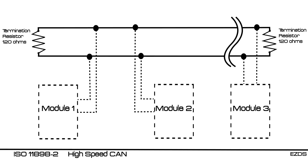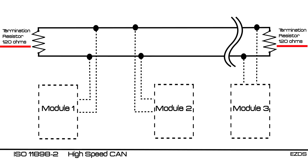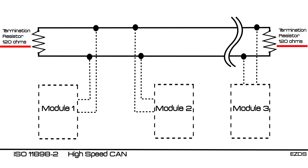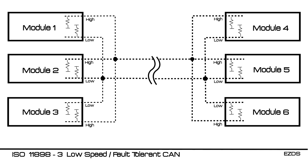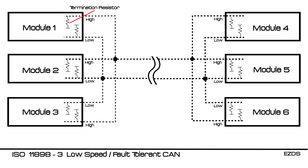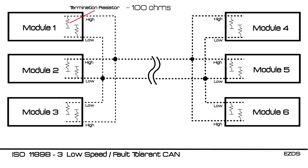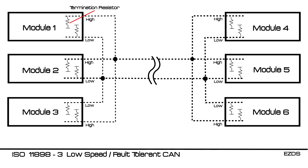High-speed CAN allows up to 1 Mbps and uses a linear bus with 120-ohm termination resistors located at each end. In low-speed CAN, instead of having two termination resistors at the ends, termination resistors are located at each module, and its overall resistance is around 100 ohms. Due to the individual termination at modules, low-speed CAN allows the CAN bus to communicate even in the case of a wire failure. It offers a transfer rate from 40 to 125 kbps.